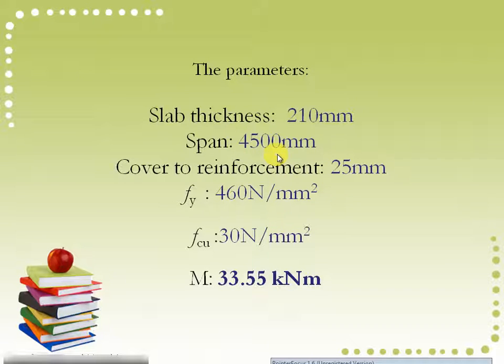The basic parameters we require for use in the Excel spreadsheet program are as follows: slab thickness 210mm, span 4500mm, cover to reinforcement 25mm, strength of steel 460 N/mm², strength of concrete 30 N/mm², and the moment which we calculated as 33.55 kNm/m.